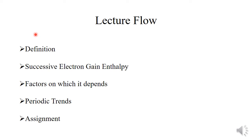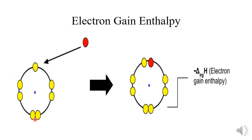We will start with its definition. Suppose this is an atom having a positively charged nucleus at its center and here is a negatively charged electron. As negative and positive charges always attract each other, this negatively charged electron gets attracted towards the positively charged nucleus and gets added to the outermost shell of the atom. During this addition, there is a change in enthalpy — some amount of energy is released — which is known as electron gain enthalpy.